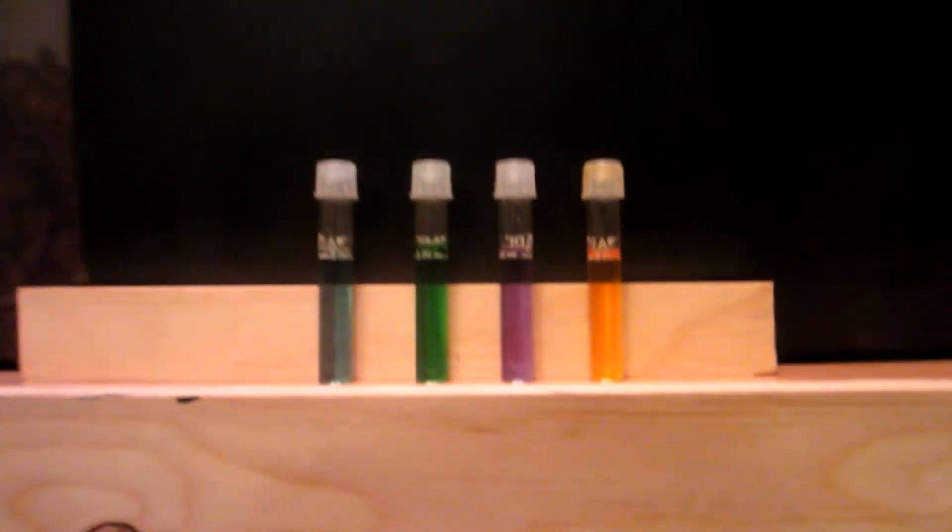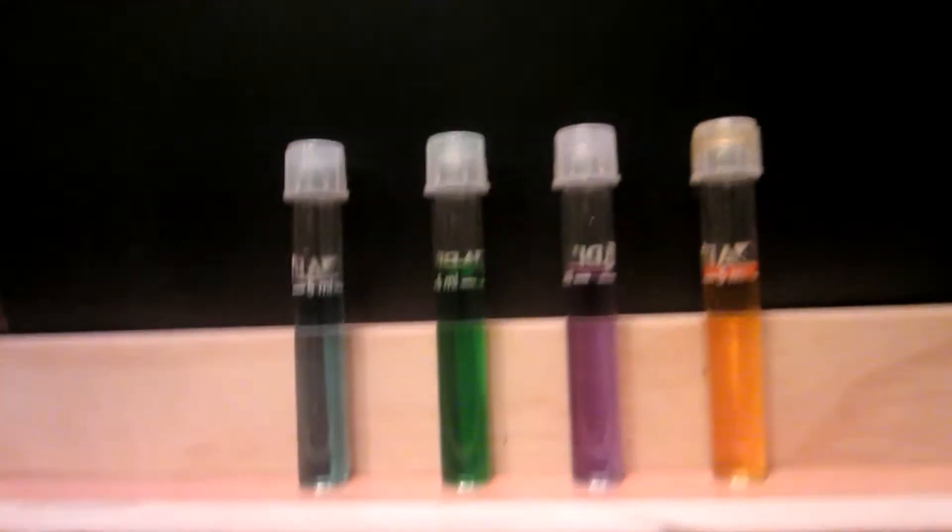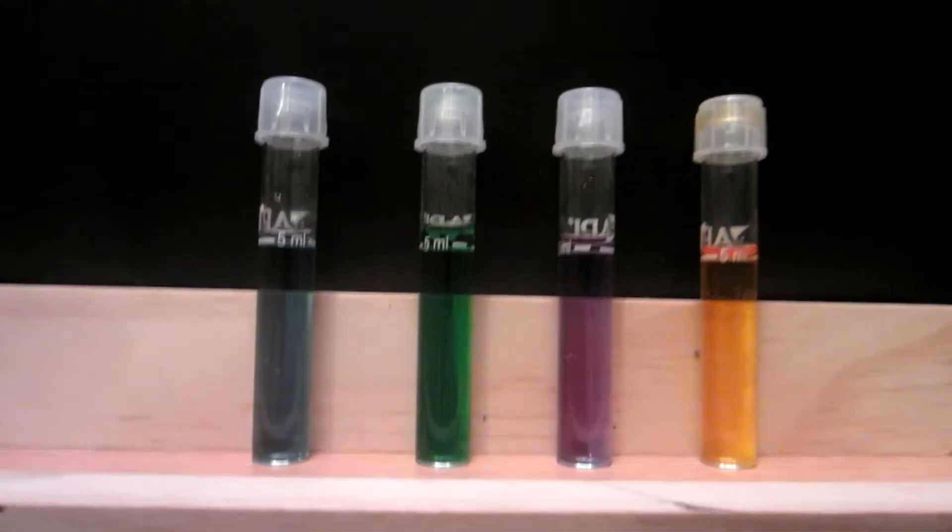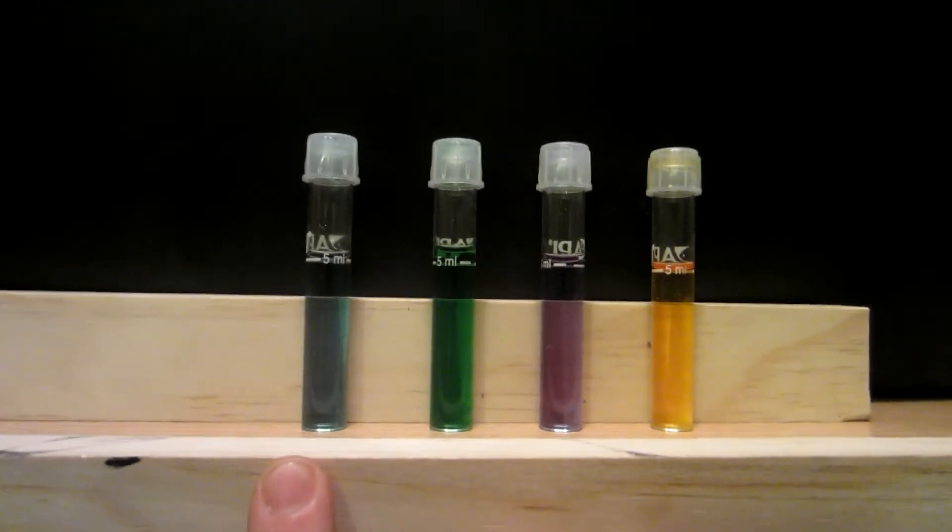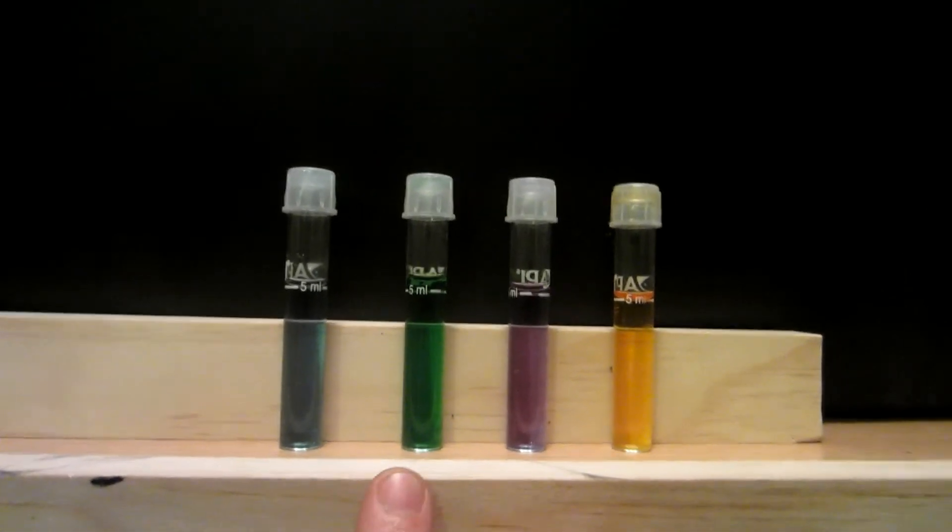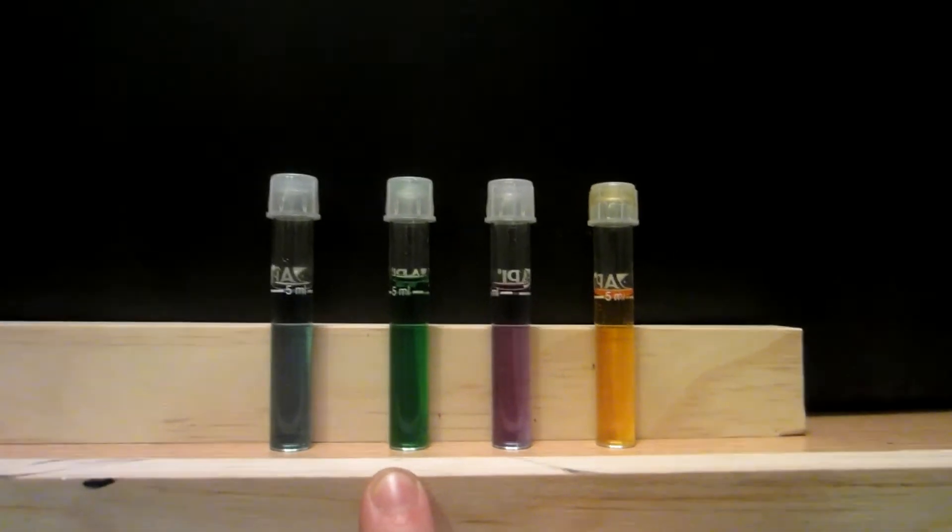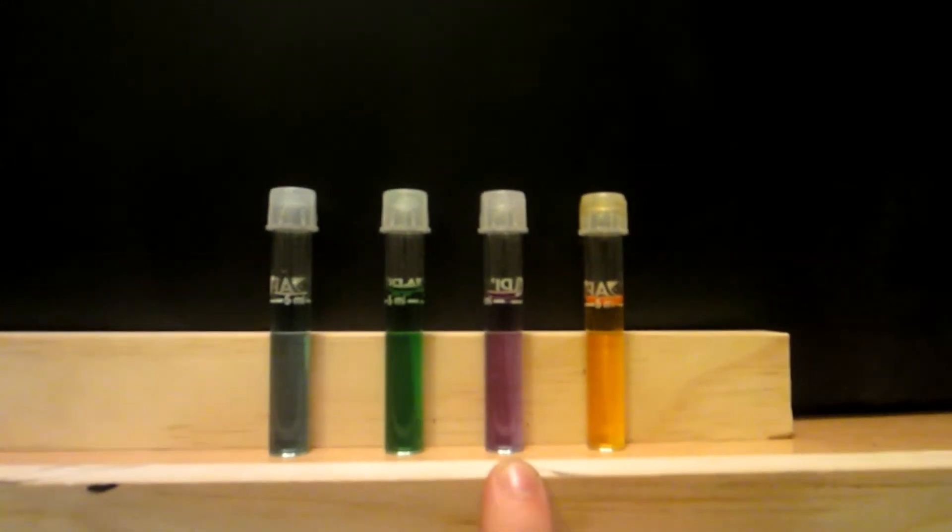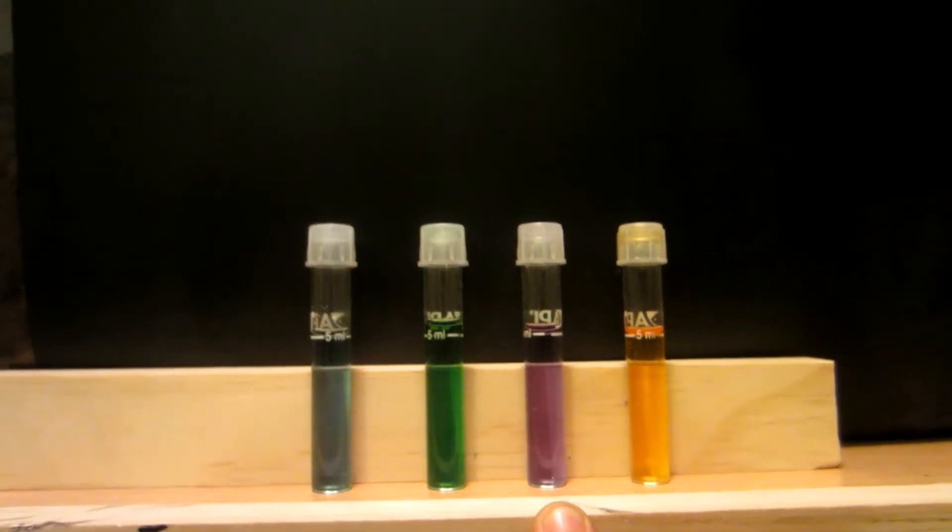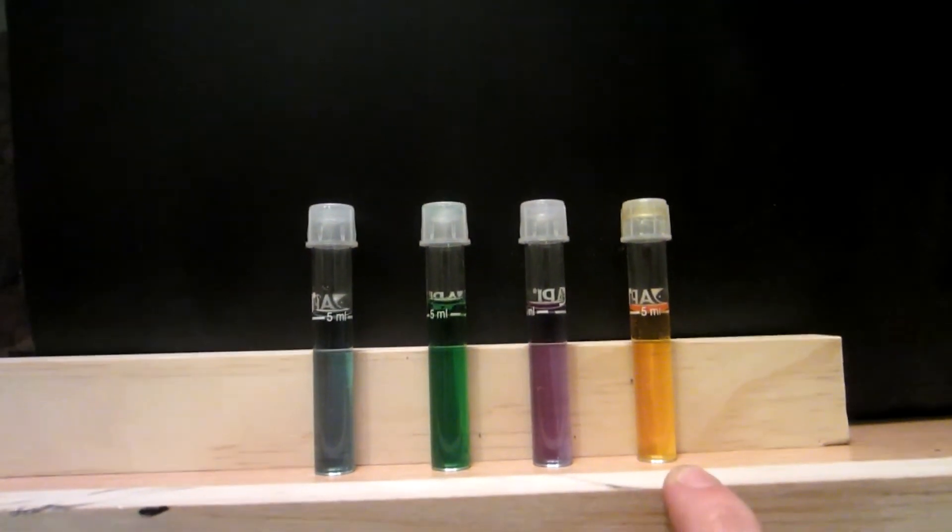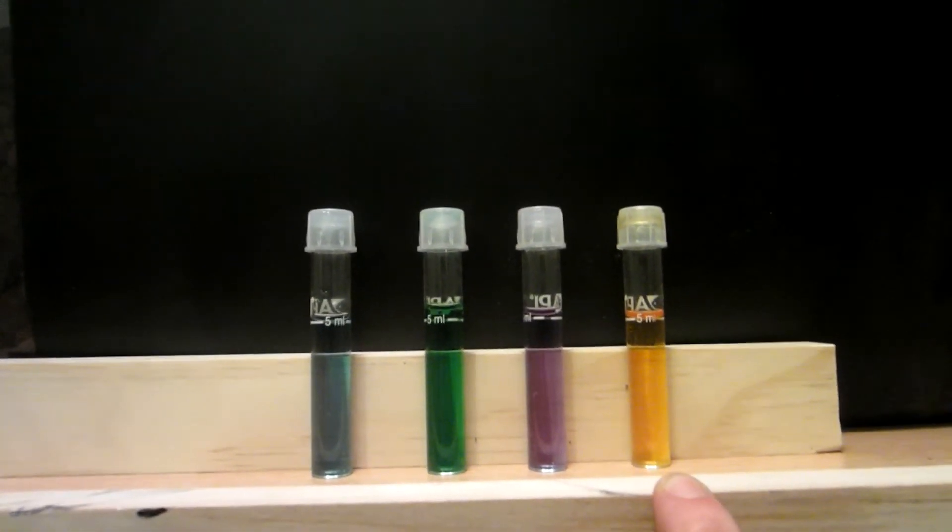But as I'm doing a fishless cycle right now with ammonia, here are my levels I just ran. I have my pH here at about 7.4. Ammonia is at 0.5 parts per million. Here's nitrites at about 0.5 parts per million. And nitrates at 0.25 parts per million.